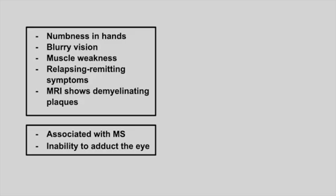Next is a patient with numbness in the hands, blurry vision, and muscle weakness. It comes and goes and the MRI is showing demyelinating plaques. This is multiple sclerosis. This is an autoimmune disease so there are going to be relapsing and remitting symptoms, and it tends to get worse with every episode.